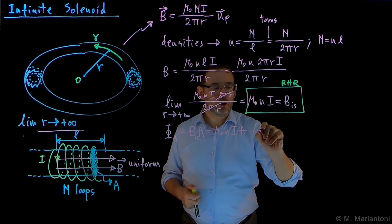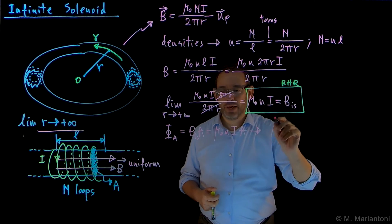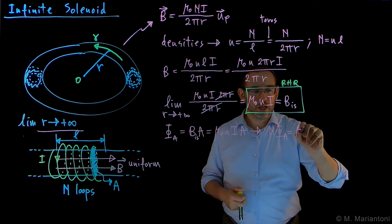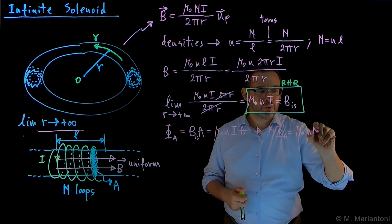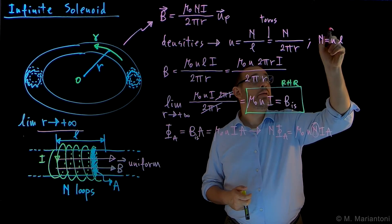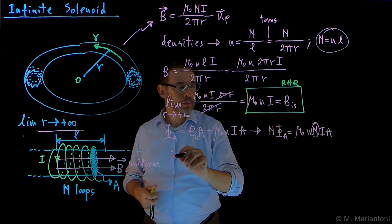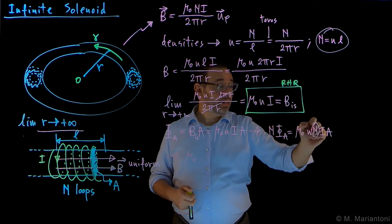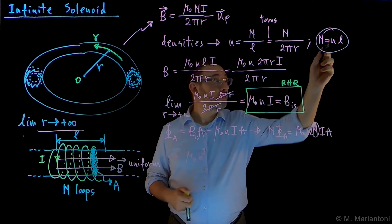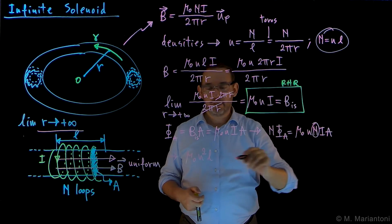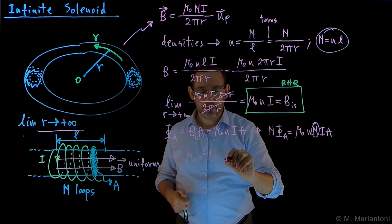So now we want to go to the flux for N loops, and so we're going to get N times phi_A, which is equal to mu_0 small n times capital N times I times A. But we know that capital N is nL, so eventually we can rewrite this as mu_0 n squared times L times A times I.